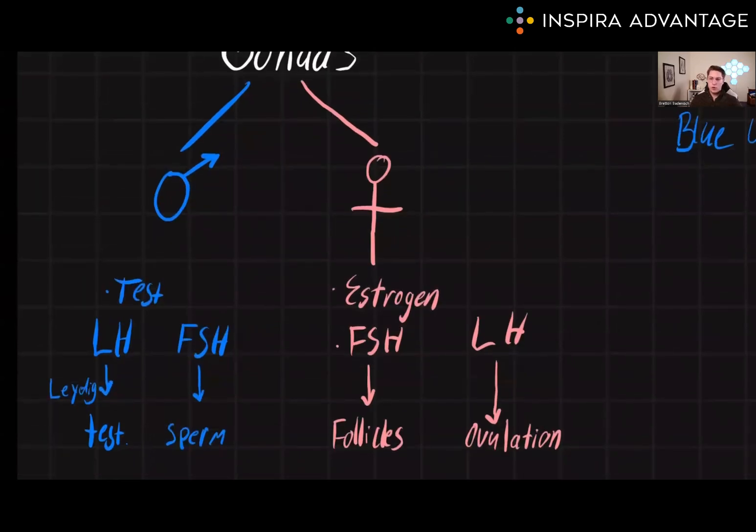The ovaries also contain several other cell types that are important for their function. We've got follicular cells, also known as granulosa cells, which surround the immature egg to help produce estrogen. We also have theca cells, which are located outside of the granulosa cells and help produce androgens that are then converted to estrogen by the granulosa cells. Theca cells are also important for ovulation and luteinization.